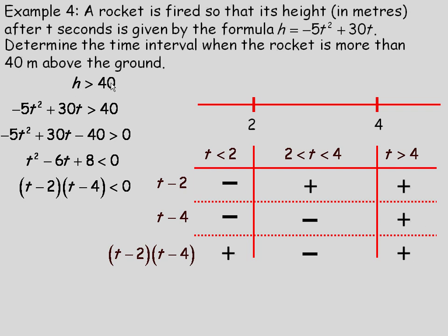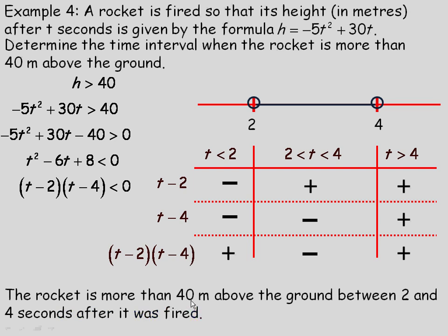We're looking for where the height is greater than 40, which means this quadratic product must be less than 0 — the negative region. Remember, we flipped the inequality when dividing by negative 5, so we look for where the product is negative to get height greater than 40. That's the interval between 2 and 4. Since we want strictly more than 40, we don't include the endpoints — so the rocket is more than 40 meters above the ground between 2 and 4 seconds after it was fired.